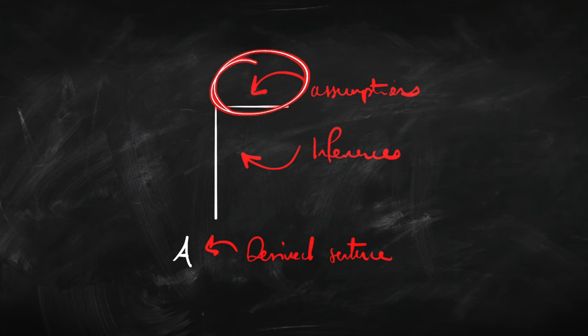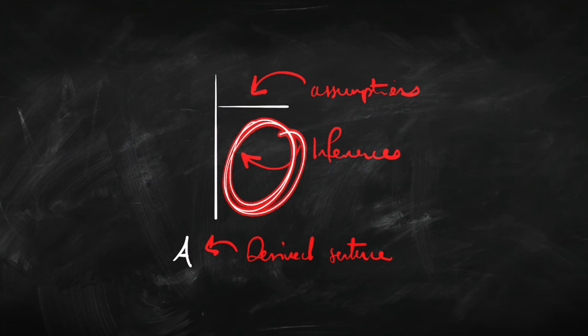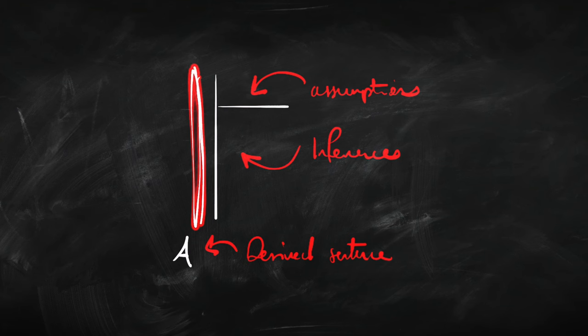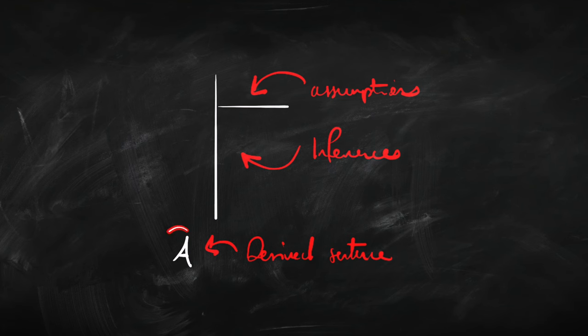Setting out a proof of a single sentence A looks like this. At the top we have our assumptions; underneath that line we have our inferences. The vertical line marks the scope of those assumptions, and A is set out to the left of that line — it's not within the scope of those initial assumptions. So we're not saying A follows from those assumptions; we're using the assumptions to derive A, but A is derivable from zero premises. It's a provable sentence.